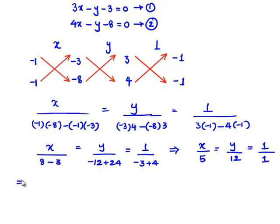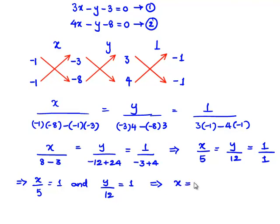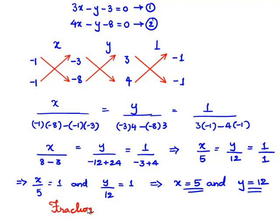From this, x/5 = 1 gives x = 5, and y/12 = 1 gives y = 12. Therefore, the required fraction is x/y = 5/12.